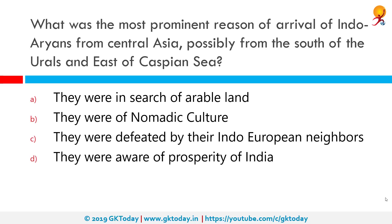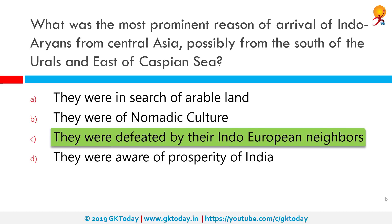What was the most prominent reason for the arrival of Indo-Aryans from Central Asia, possibly from the south of the Urals and east of the Caspian Sea? They arrived because they were defeated by their Indo-European neighbors. Indo-Aryan migration models discuss scenarios around the theory of origin from outside the Indian subcontinent of Indo-Aryan people, an ethno-linguistic group that spoke Indo-Aryan languages, the predominant languages of North India.